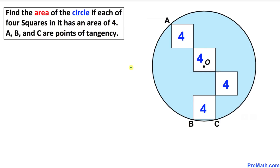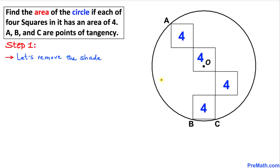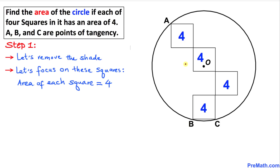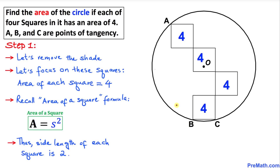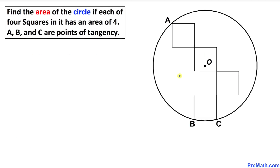Here's our very first step: let's go ahead and remove the shade from this figure. Now let's focus on these squares. We know that each square has an area of four. Recalling the area of a square formula, A equals s squared, the side length of each square is going to be two units.